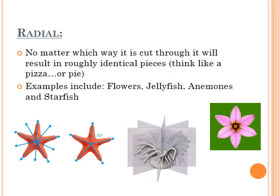Examples of radial symmetry include flowers, jellyfish, sea anemones, and starfish, just to name a few. Remember: radial — think out from the center, like a radian. Yeah, we just talked about math. That happened. I was there. Let's keep going.